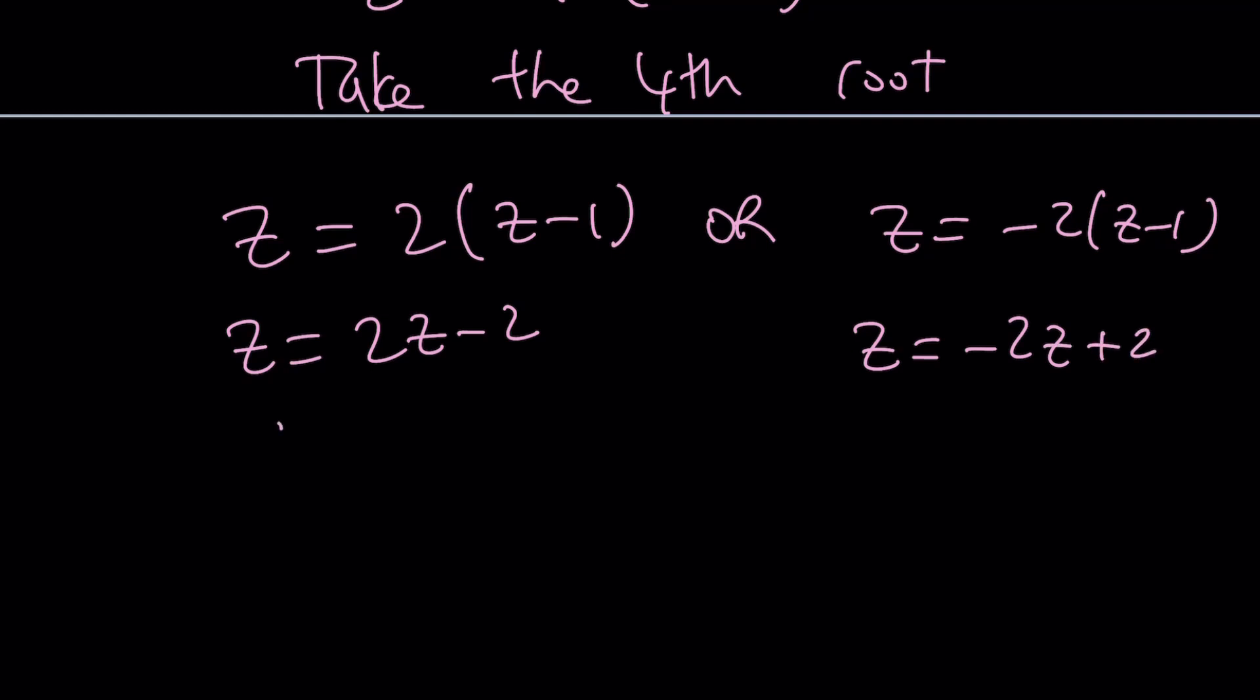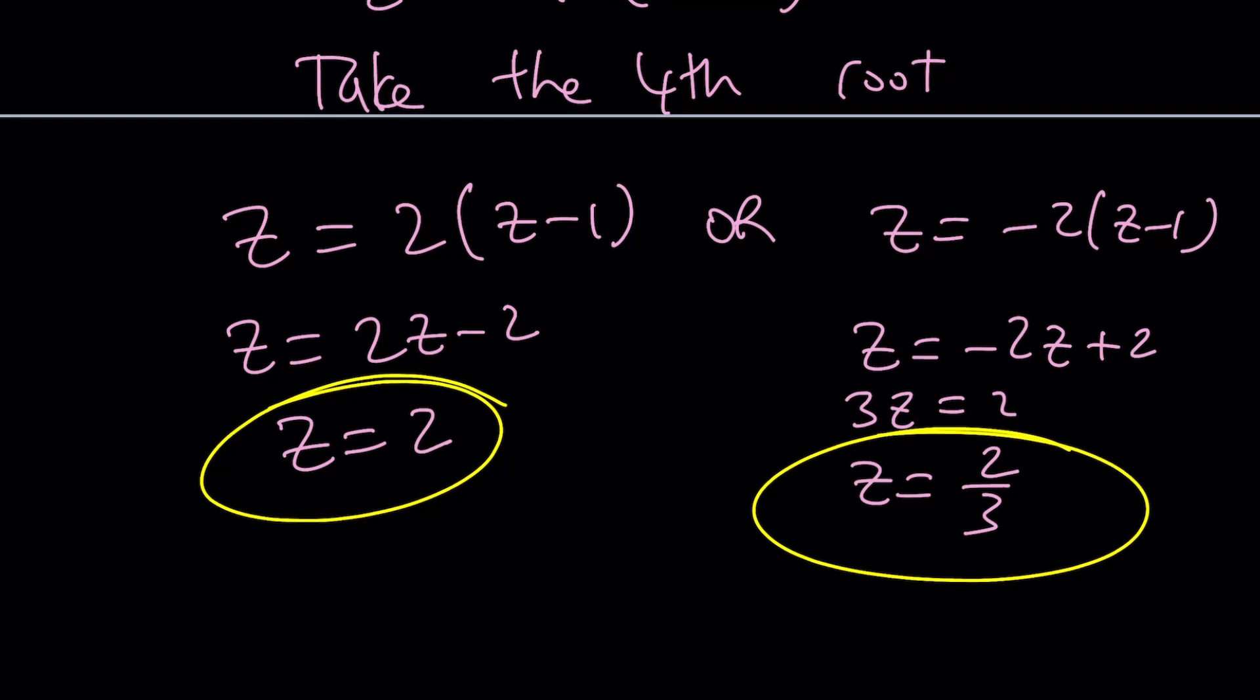Let's go ahead and work with these two equations first because those are easy to handle. 2Z minus 2, and this is going to be negative 2Z plus 2. The first one gives us Z equals 2 as before, and this one gives us 3Z equals 2, which means Z equals 2 thirds. So we got two solutions that are real.